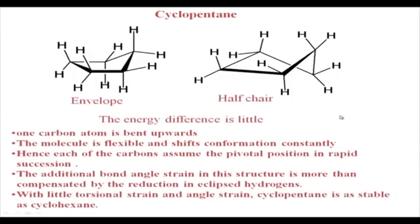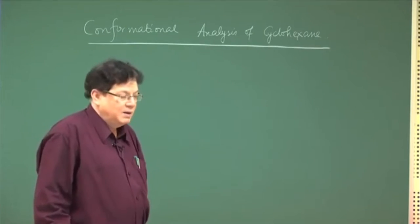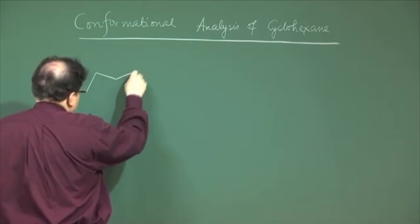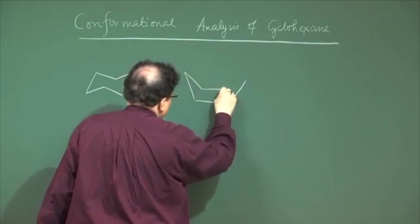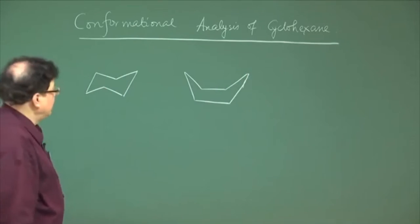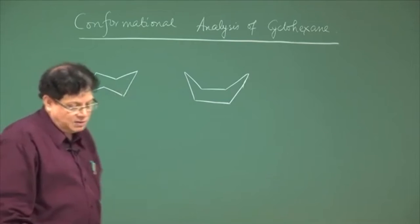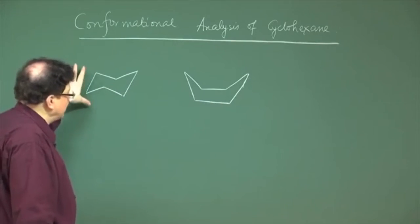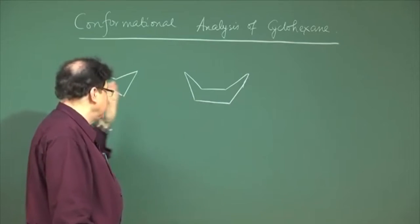Moving to cyclohexane: Sacsay and Moore first proposed that cyclohexane exists in two extreme conformations — the chair conformation and the boat conformation — named for their geometry. Among these two, the chair conformation is more stable than the boat. We will first inspect the chair conformation, then move on to the boat to explain why it is less stable.